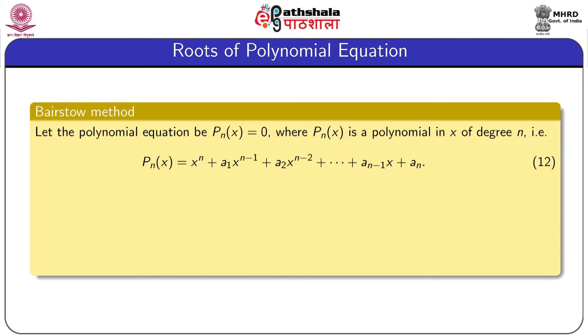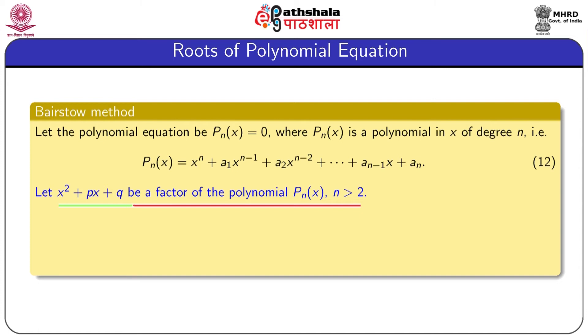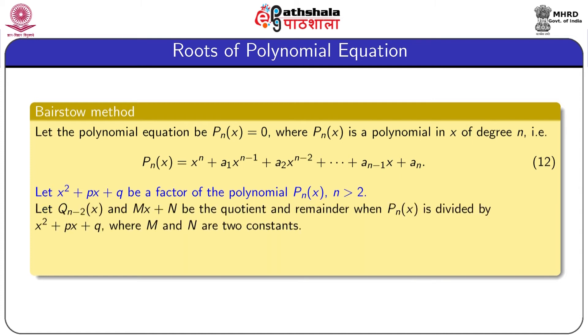We now describe another method called the Bairstow method to find all roots of a polynomial equation. The main principle is to extract a quadratic polynomial from the given polynomial P_n(x), since finding roots of a quadratic polynomial is a very simple task. We describe this method for P_n(x) = 0, where P_n(x) is a polynomial of degree n > 2. Let x^2 + p·x + q be a quadratic factor of P_n(x).